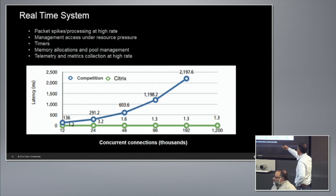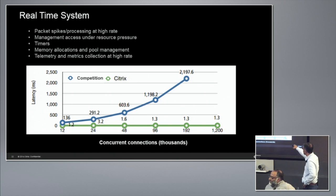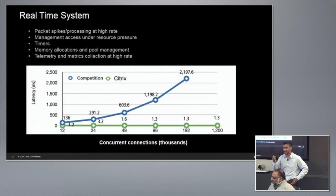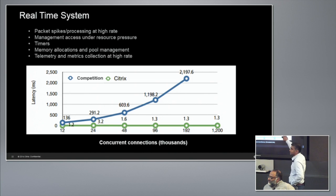We did a test at a customer site, done by a third party. This chart shows that as you increase concurrent connections — lower is better — the green line is NetScaler. At 1.2 million concurrent connections, our latency was essentially flat. This is because we do good time-slicing of CPU, allocate enough resources to maintain manageability, and carefully manage timers. With the competition, as concurrent connections went up, latency suffered significantly.